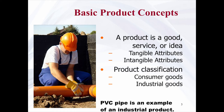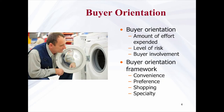Product classifications. Products can be divided into consumer goods and industrial goods. A frequently used framework for classifying products distinguishes between consumer and industrial goods, which in turn can be further classified on the basis of criteria such as buyer orientation. Buyer orientation comprises the amount of effort expended, level of risk, and buyer involvement, and its framework consists of attributes such as convenience, preference, shopping, and specialty.